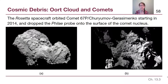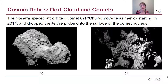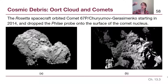Comet tails point away from the Sun, but when comets are far away from the Sun, they do not have those tails — those tails show up when the comet heats up and sublimates. The Rosetta spacecraft was a European Space Agency mission that orbited comet 67P in 2014 and even dropped a probe onto the surface to take very close-up images.